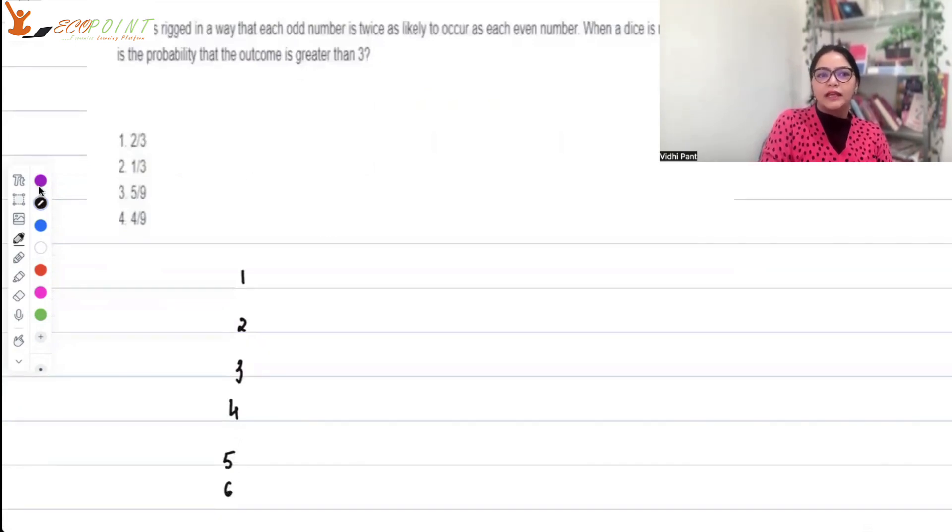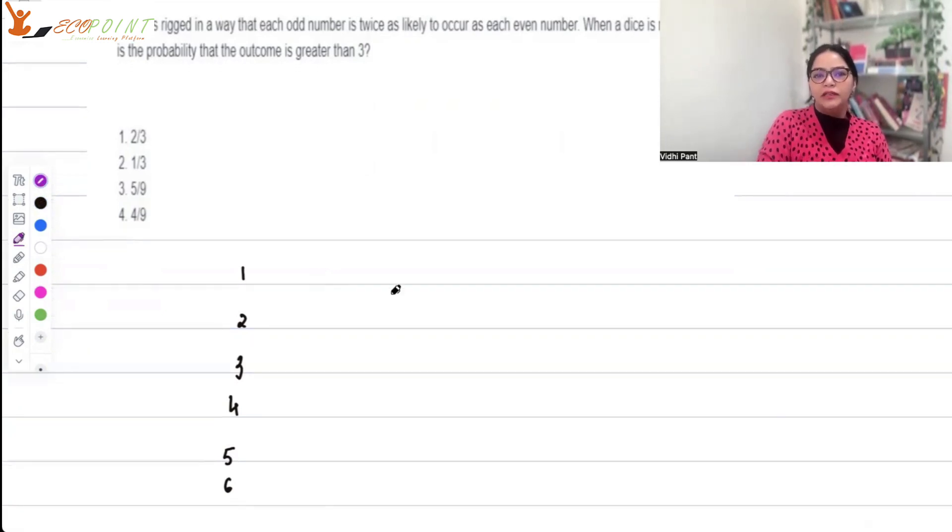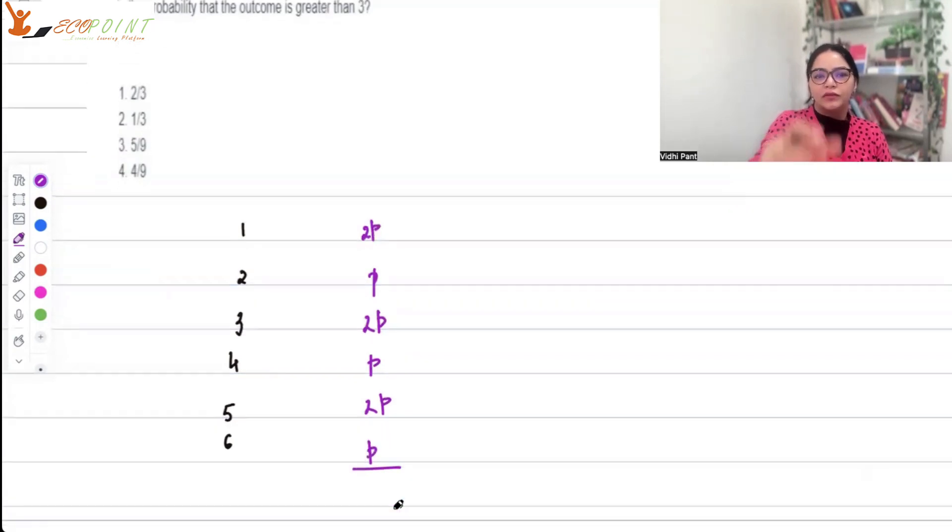What is given is that if probability of an even number is p, then probability of an odd number is 2p. So all odd numbers have probability 2p and all even have p. The total is 9p. If we want probability that X is greater than 3, that's the probability of 4, 5, and 6. That is 4p/9p, which equals 4/9, option 4.